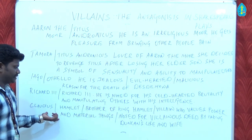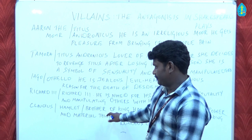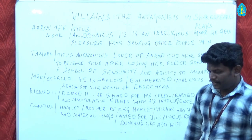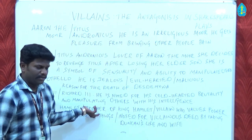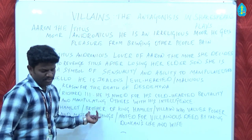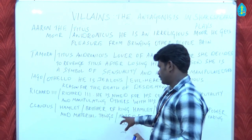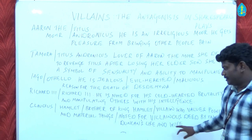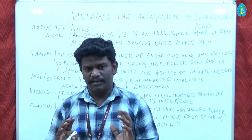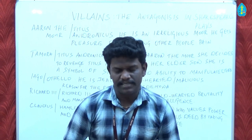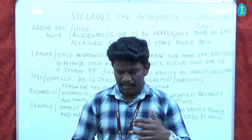The last character is Claudius in the play called Hamlet. Who is Claudius? Claudius is the brother of King Hamlet and he is a villain who always values money and material things. This particular man is the husband of Gertrude, who is the wife of Hamlet. He is a man who kills even his own brother for lust, money, and power. So this particular man is noted for his villainous deeds. All these characters are very, very dominant and they were given very equal rights to the heroes of Shakespeare. We can see the remaining villains of Shakespeare in the next video.